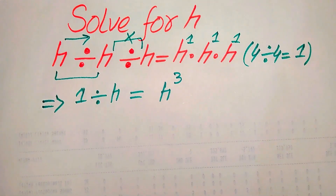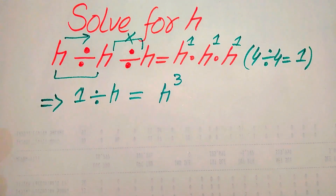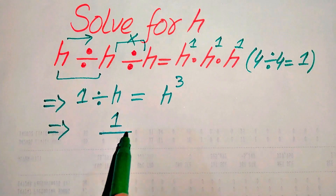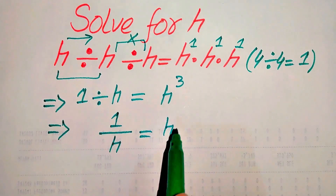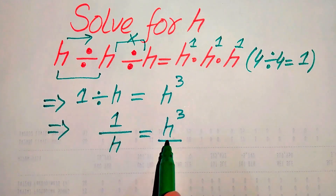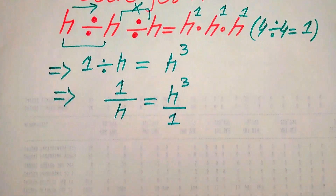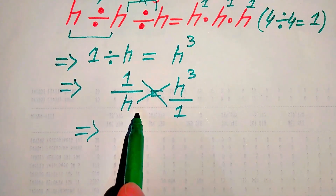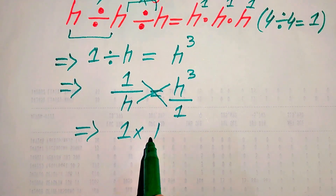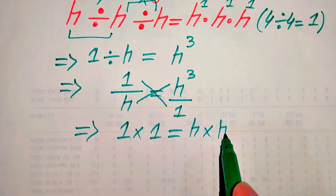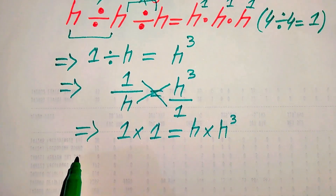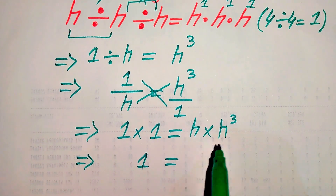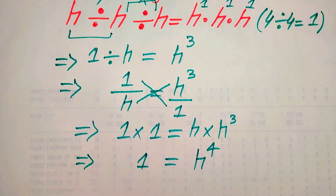In the next step, we rewrite 1 divided by h as 1 over h, which equals h cubed. The denominator of the right hand side term is 1, so we cross multiply: we multiply 1 with 1 and h with h cubed. After cross multiplication, 1 multiplied by 1 equals 1, and h multiplied by h cubed equals h to the power of 4.